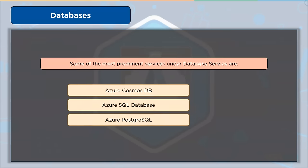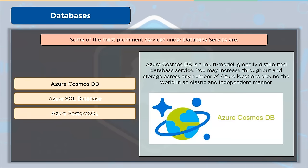Azure Cosmos DB is a multi-model, globally distributed database service. You can increase throughput and storage across any number of Azure locations around the world in an elastic and independent manner, using several common APIs to get single-digit millisecond data access. Throughput, latency, availability, and consistency guarantees are all covered by Azure Cosmos DB's service level agreements. It enables schema-less data, allowing you to create extremely responsive, always-on apps that handle constantly changing data.